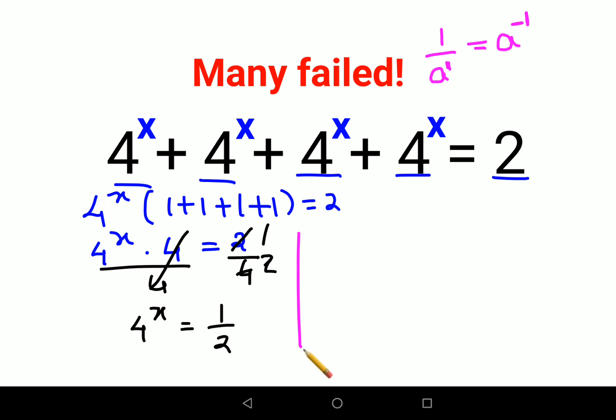Therefore, 4 raised to x equals to 2 raised to minus 1. And if you remember, 4 can be written as 2 raised to 2, the whole raised to x, equals to 2 raised to minus 1.